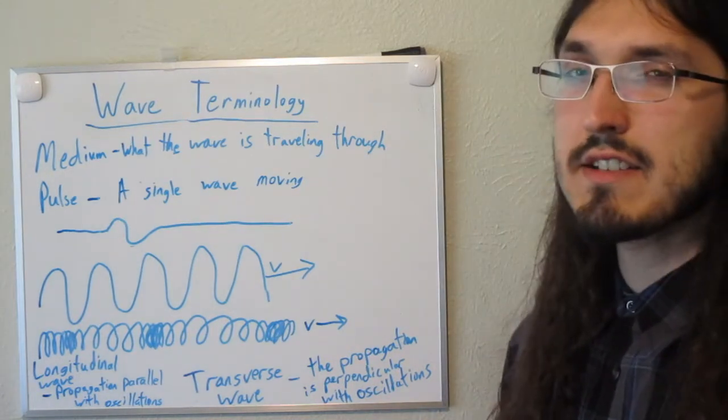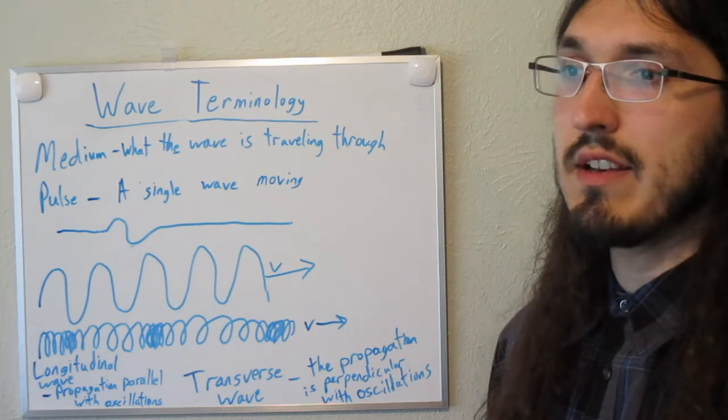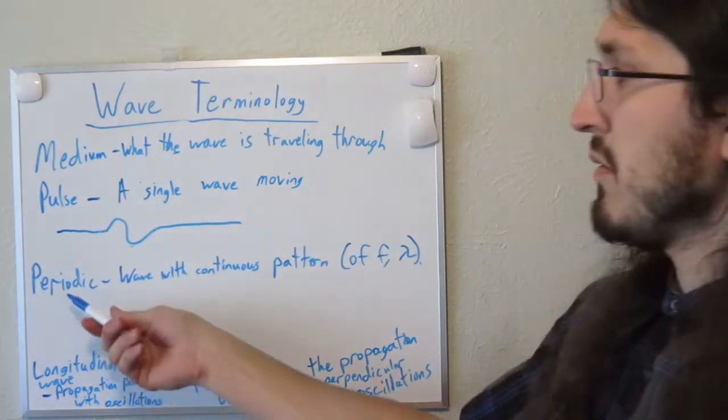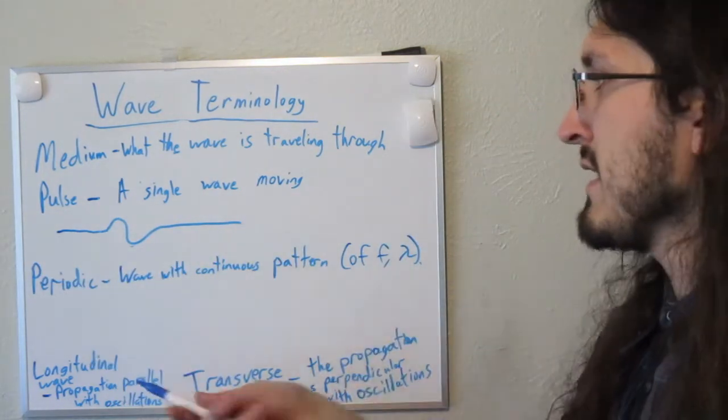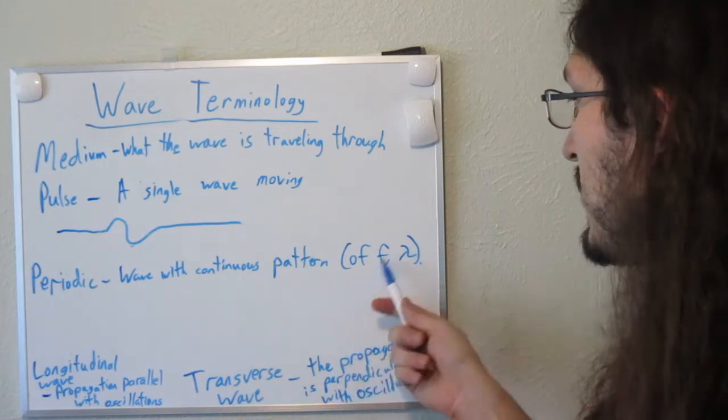The last term I want to define is called periodic, and that describes waves that move in a certain pattern with time. Okay, so a more formal definition. It's a wave with a continuous pattern of changing frequency and wavelength.